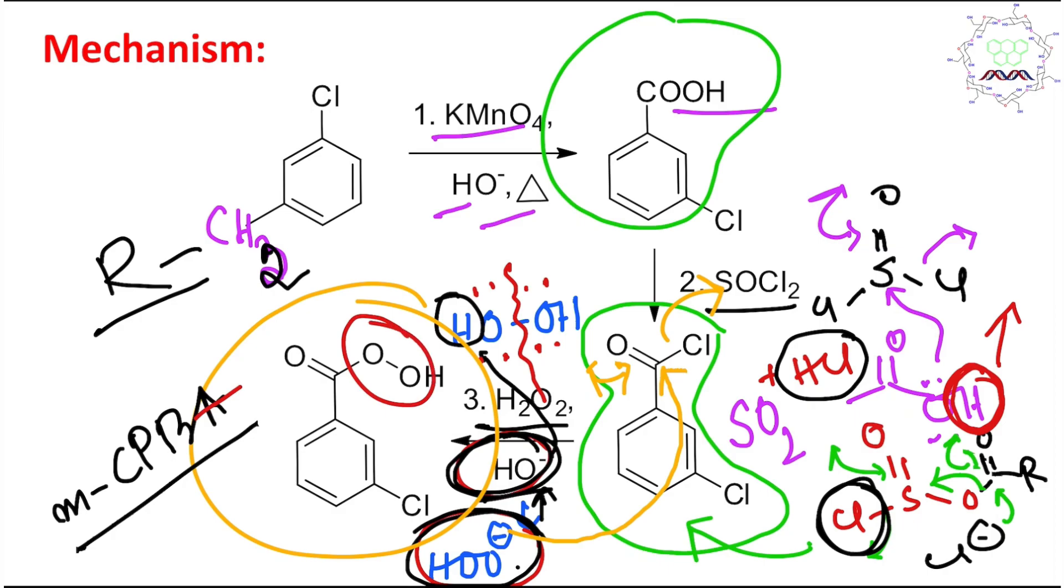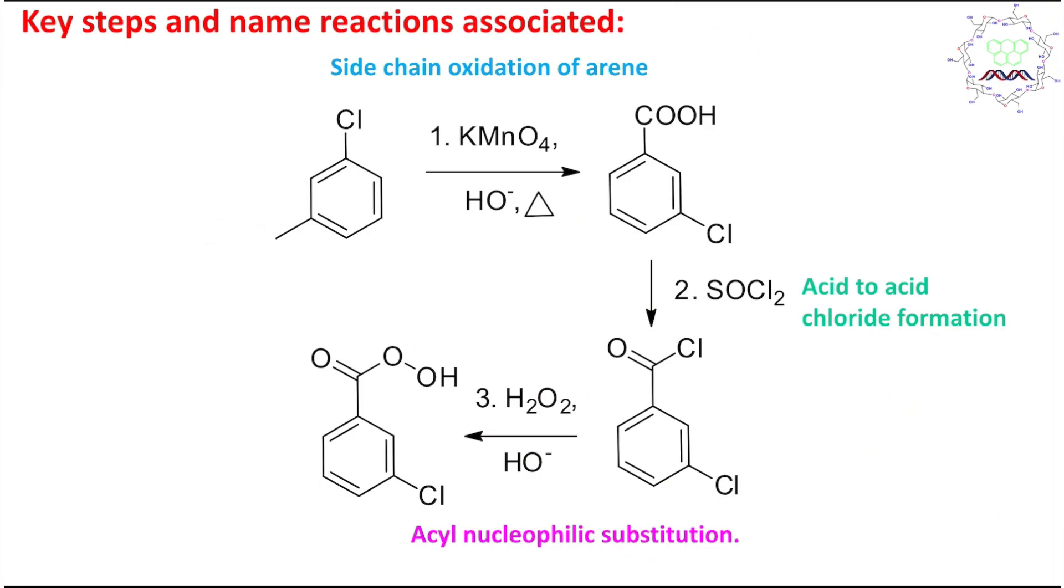What are the key steps and name reactions associated here? First step is called side chain oxidation to convert any side chain of this aromatic compound into carboxylic acid, maximum oxidation.